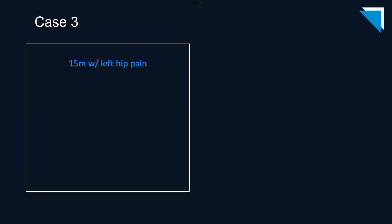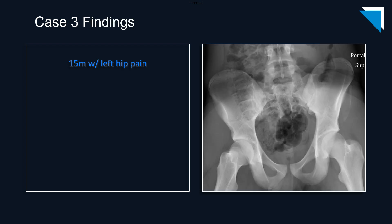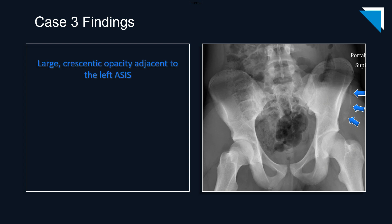Here's a similar case — this is a 15-year-old boy with left hip pain. Again, we have a single AP radiograph of the pelvis. And once again, we have a curvilinear opacity adjacent to the left anterior superior iliac spine. In this case it's much more conspicuous, consistent with another anterior superior iliac spine avulsion fracture.